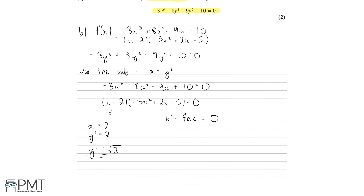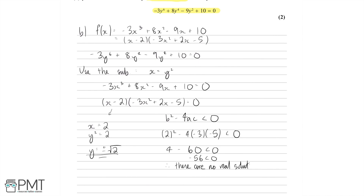Taking this quadratic and plugging into the discriminant: b squared is 2 squared, minus 4 times a which is minus 3, times c which is minus 5. That gives us 4 minus minus 4 times minus 3 times minus 5, which is 4 minus 60, giving minus 56, which is less than 0. Therefore there are no real solutions to this quadratic, and we conclude that y equals plus and minus root 2 are the only two real solutions.